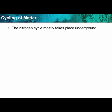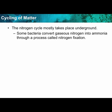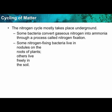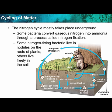The nitrogen cycle takes place mostly underground. Some bacteria convert gaseous nitrogen into ammonia through a process called nitrogen fixation — that's why these bacteria are extremely valuable and important. Some nitrogen-fixing bacteria live in nodules on the roots of plants, and others live freely in the soil. They take the very stable nitrogen in the air and convert it into ammonia or nitrates. When living things die and decompose, the nitrogen — which was in the form of protein — is returned to the soil and atmosphere, and nitrogen-fixing bacteria help put it back into a form usable by living processes.